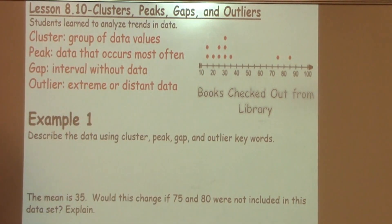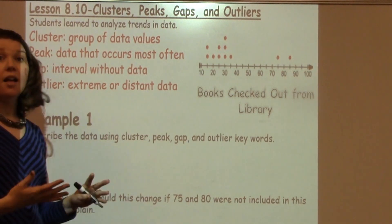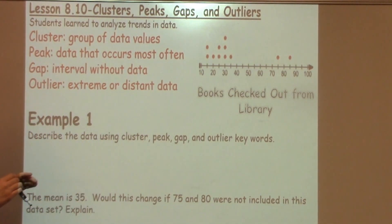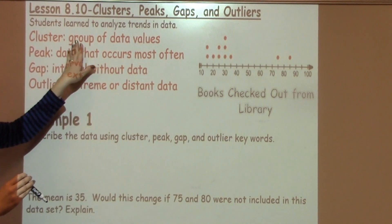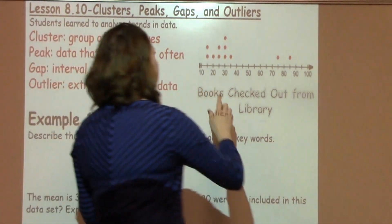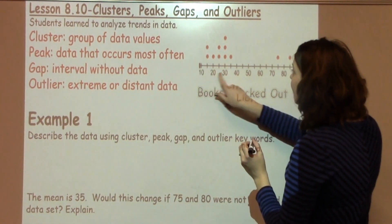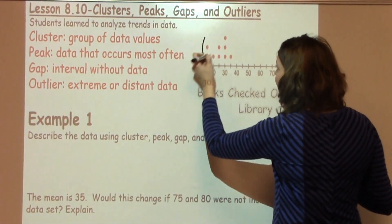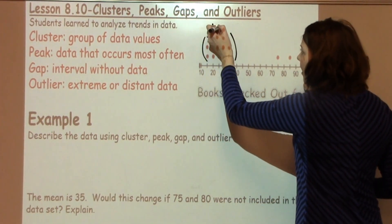So let's describe the data using cluster, peak, gap, and outlier keywords. The very first thing I'm going to do is look at cluster, remembering that cluster is a group of data values. As I'm looking at my dot plot, I can see already from 15 to 35, I have definitely got a cluster of data.